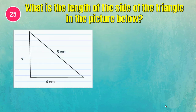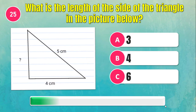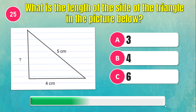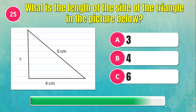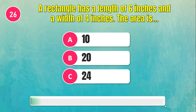What is the length of the side of the triangle? The area of the rectangle is 60.